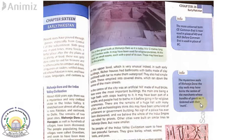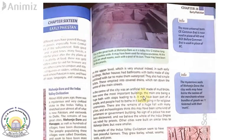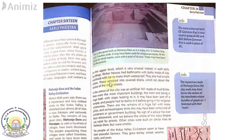At a time when people did not have much knowledge about building houses, these cities had multi-story buildings — much like the two- or three-story buildings we have today — which was very rare. Richer houses had bathrooms with baths made of clay and lined with tar to make them waterproof.